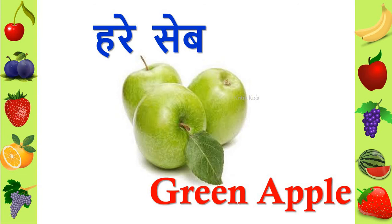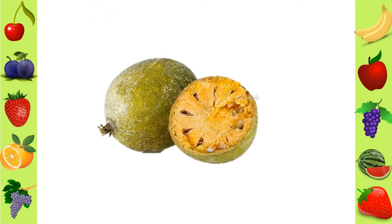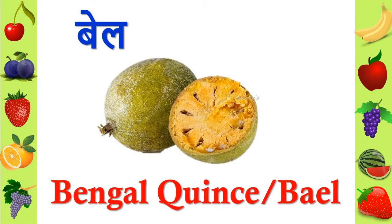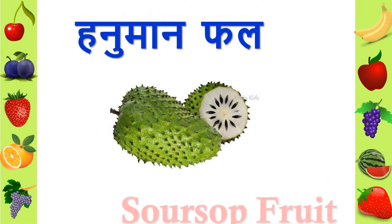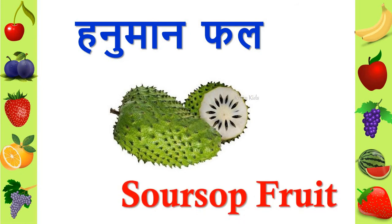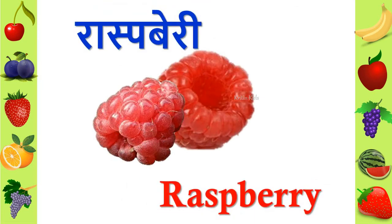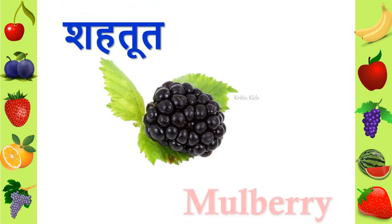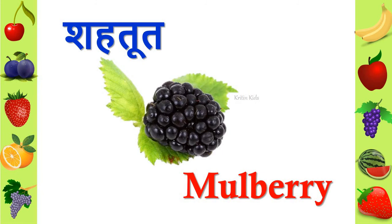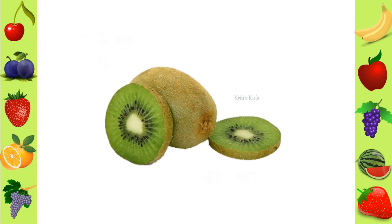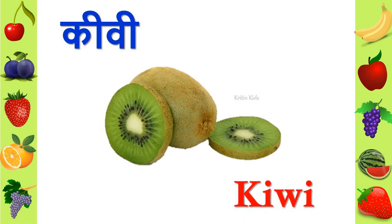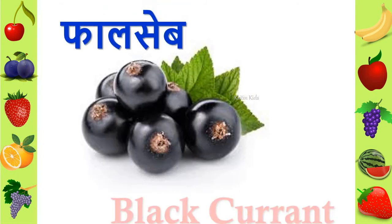We call it hari seb and in English we call it green apple. We call it aadoo and in English we call it peach. We call it raspberry in Hindi and in English we call it raspberry. We call it shahtoot in Hindi and in English we call it mulberry. We call it kiwi in Hindi and in English we call it kiwi.